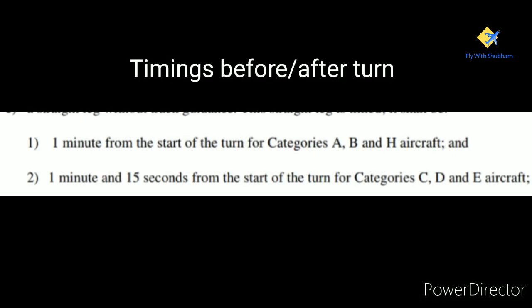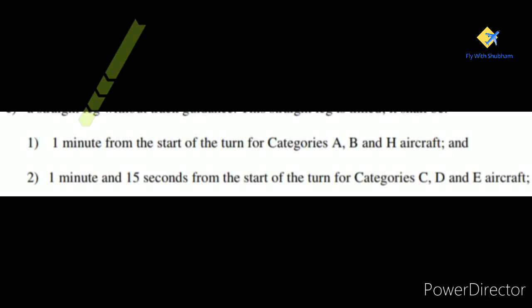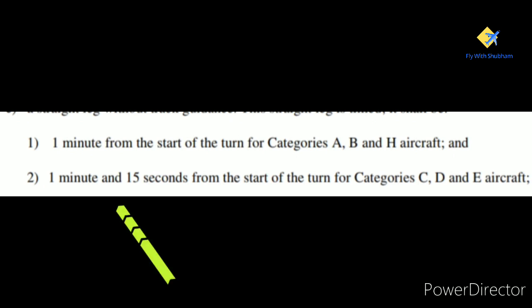CAT A and CAT B timings are 1 minute if the timer is started from the start of the turn, or 45 seconds if the timer is started after the completion of the turn. CAT C, D, and E timing will be 1 minute 15 seconds from the start of the turn, or 1 minute after the completion of the turn. This information will come in handy when we discuss the 45-180 turn in detail.